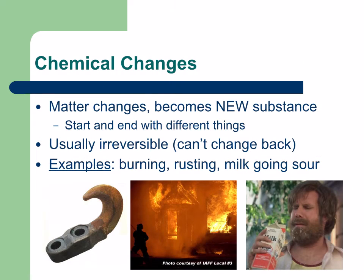In chemical changes, however, the matter changes and becomes a new substance. You start with A and you end with B. It's usually irreversible, so you can't change it back. Have you ever been able to un-light a match or un-bake a cake? Examples include burning, rusting, or milk going sour. If you leave milk too long in the fridge, it's not going to un-rot — you're going to have to throw out that milk.